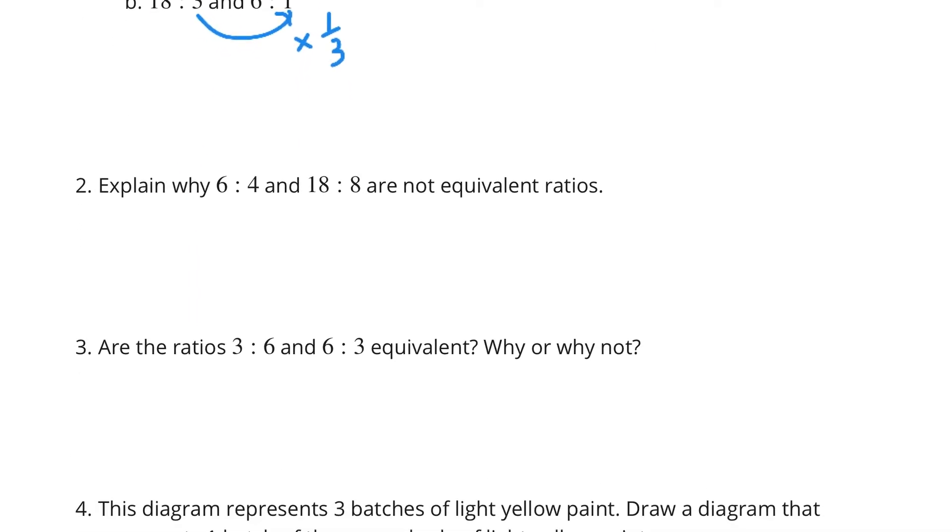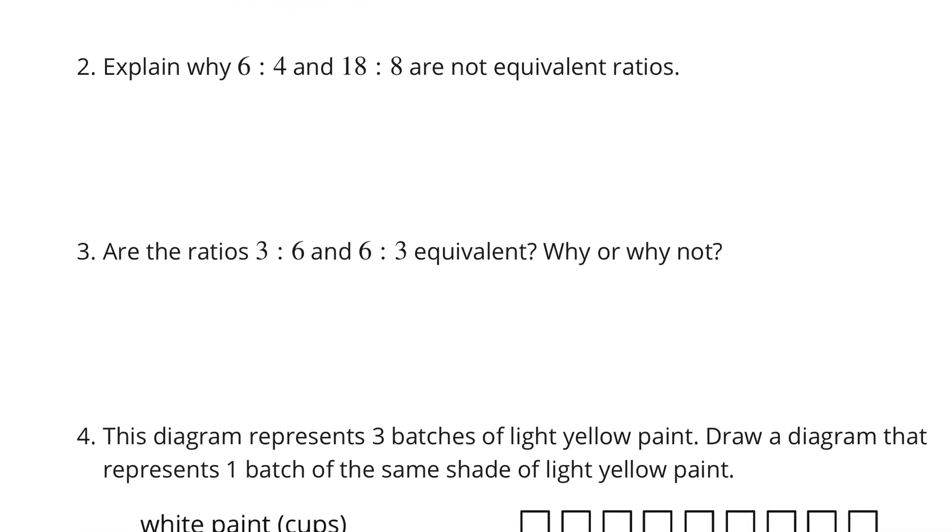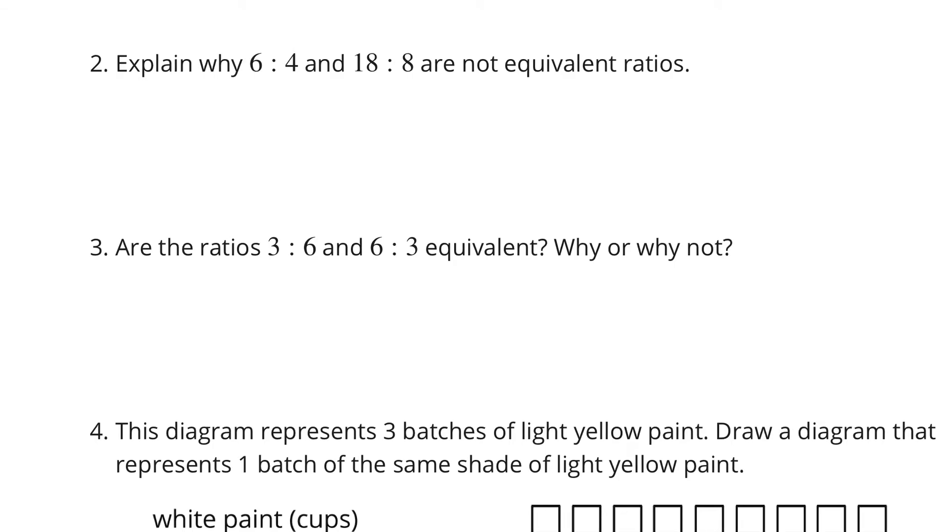Now, in question number 2, explain why 6 to 4 and 18 to 8 are not equivalent ratios. Well, from 6 to 18, we're multiplying by 3. And now, we have two options here. We can show that 4 times 2 is 8, and so these aren't the same, so it's not an equivalent ratio. You could also say, well, 4 times 3 would be 12, and 8's not equal to 12 up there, so it's not equivalent.